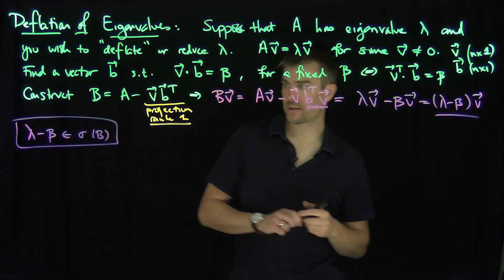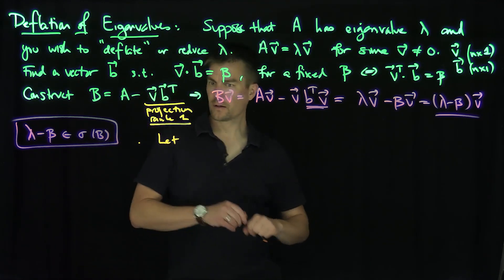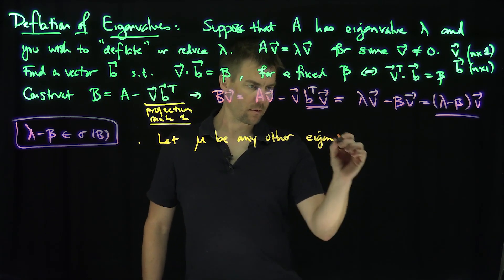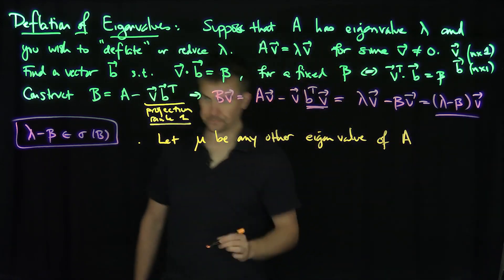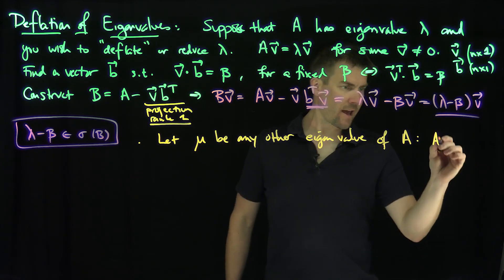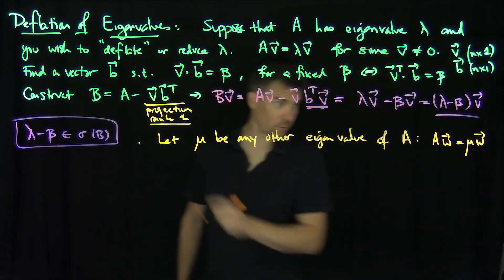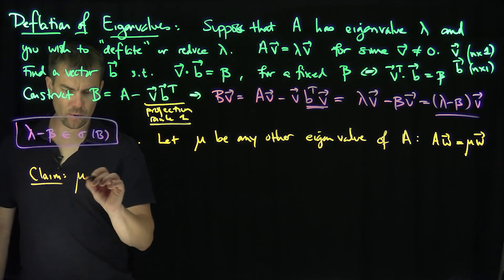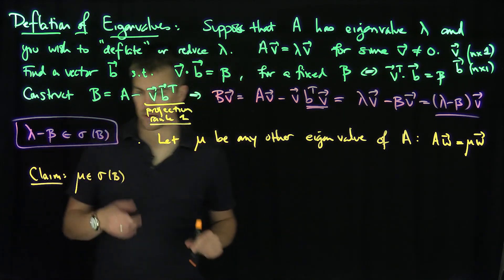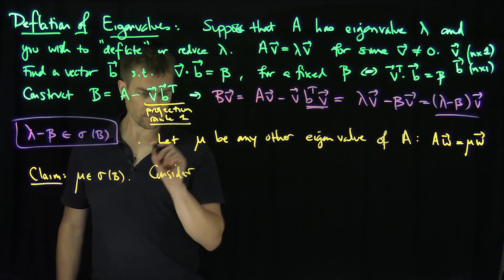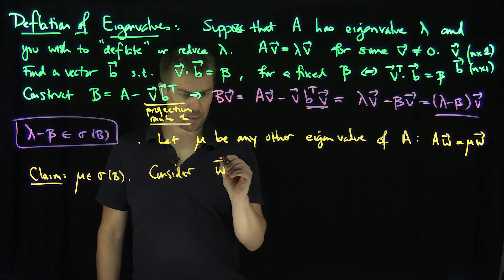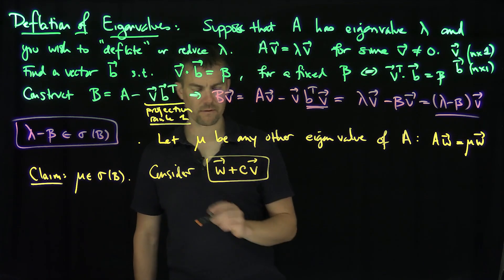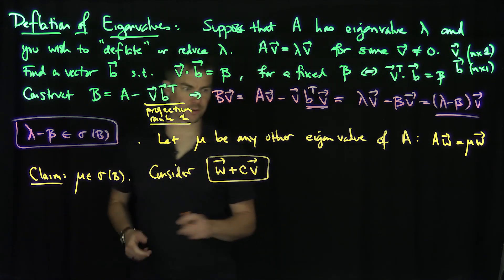Now let μ be any other eigenvalue of A, so Aw = μw for some non-zero vector w. I claim that μ is also in the spectrum of B. To prove this, consider the family of vectors w plus C times v, for some parameter C, and plug these into B.